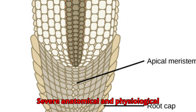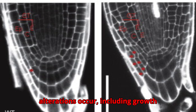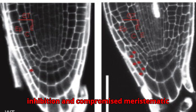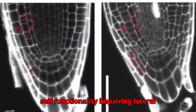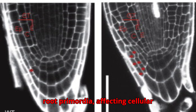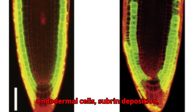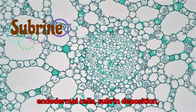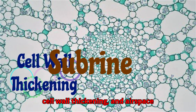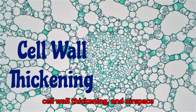Severe anatomical and physiological alterations occur, including growth inhibition and compromised meristematic cell functionality, impairing lateral root primordia, affecting cellular hierarchy and quiescent center formation. Cortex tissues experience changes in endodermal cells, suberin deposition, cell wall thickening, and airspace formation.